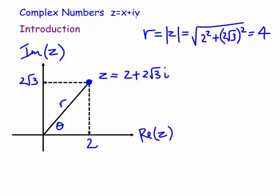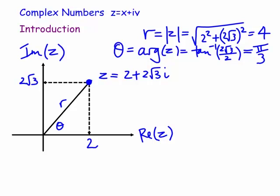How about the theta? Theta is arg of z. So, arg of z, which is theta, is equal to tan inverse of 2 root 3 on 2, which is the inverse tan of root 3. Now, the inverse tan of root 3 is inverse tan of 60 degrees, which in radians, we know we put the argument in radians, 60 is just pi on 3. So the angle would be pi on 3.